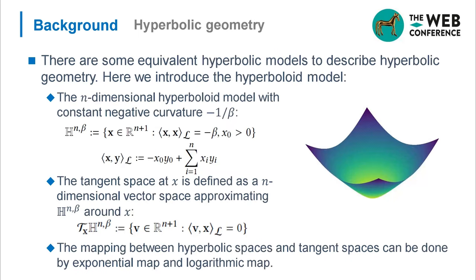There are many equivalent hyperbolic models to describe hyperbolic geometry. Here, we introduce the hyperboloid model. The n-dimensional hyperboloid model with constant negative curvature -1/β is defined by the following equations. A very important concept is tangent space, which can conduct operations not defined in hyperbolic space. The mapping between hyperbolic space and tangent space can be done by exponential map and logarithmic map.